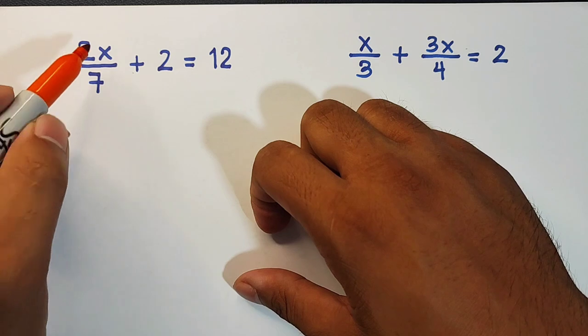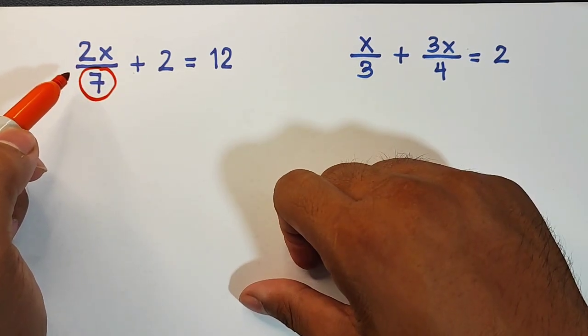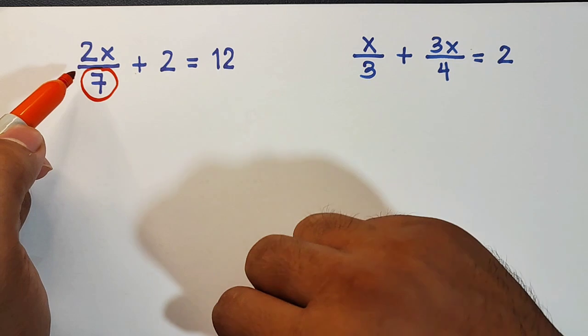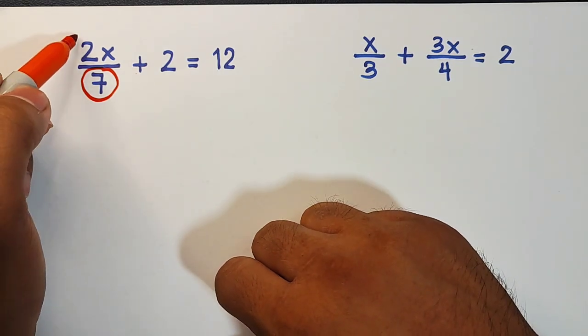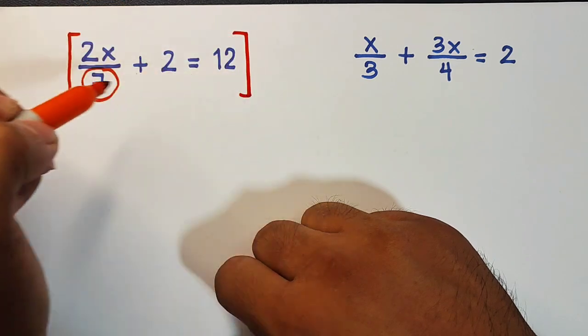As you can see, we have here a denominator of 7, so what we need here is to eliminate 7 in order to find the value of x. The process is you will multiply the whole equation by your denominator, which is 7.